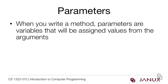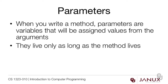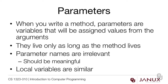Parameters are different though. When you write a method, parameters are variables that will be assigned values from the arguments. The parameters are essentially fakes — they're just standing in for the arguments. We have to give them a name because we don't know what argument is going to be passed in when we write the method. They only live as long as the method lives, so they have a very short lifespan usually. The parameter names are actually irrelevant — you could call them anything — but we always try to give our parameters meaningful names because it makes the code easier to read.